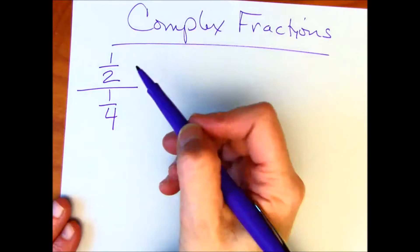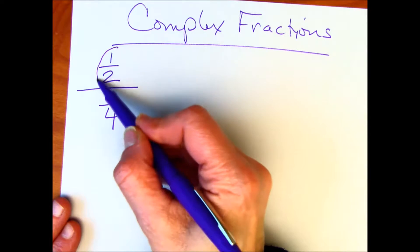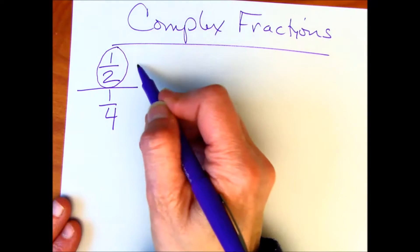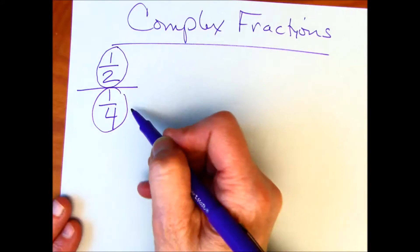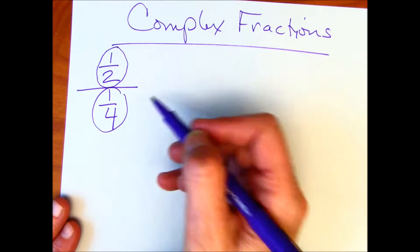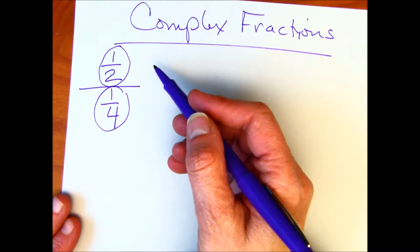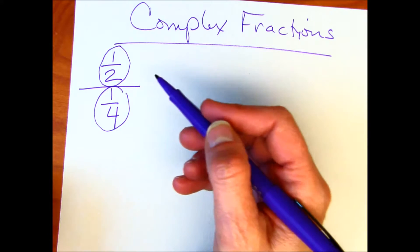When we have a fraction that's made up of fractions, for instance, this top number is the numerator, but it's in fraction form, and this denominator is also a fraction. So this is what makes it complex: when you have a fraction that's made up of fractions within the fraction.